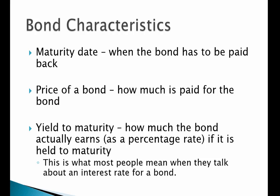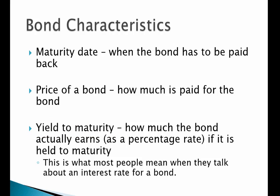If bonds are issued at a premium, the borrower may get more in proceeds than the face value, though that's not typically what happens. Typically, companies issue bonds at face value — at par — so they sell them for $1,000 and then pay back $1,000 at maturity. The yield to maturity shows how much the bond will earn as a percentage rate if held to maturity, with the caveat that it assumes the investor can reinvest interest payments at the yield to maturity rate. This is what most people think about when they talk about the interest rate for a bond.